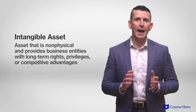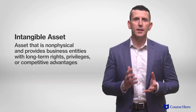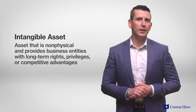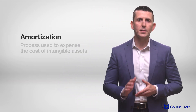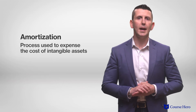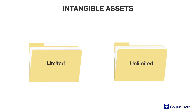An intangible asset is an asset that is not physical — that cannot be touched. These assets typically represent rights, privileges, or competitive advantages. The most common intangible assets are patents, copyrights, trademarks, and goodwill. While the process used to gradually expense the cost of fixed assets is called depreciation, and the process used to expense the cost of natural resources is called depletion, the process used to expense the cost of intangible assets is called amortization. Intangible assets can be categorized by their useful life: limited or unlimited.